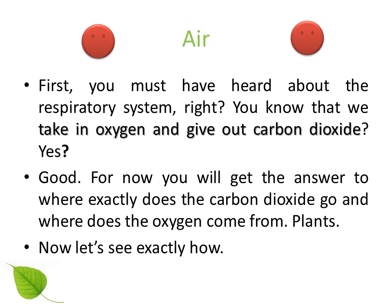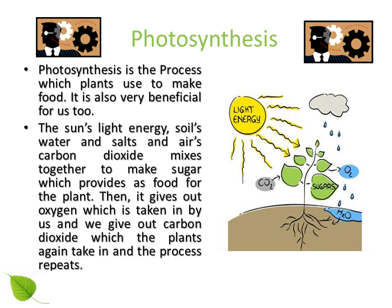Now let's see exactly how. Photosynthesis is the process which plants use to make food. It is also very beneficial for us. The sun's light energy, soil's water and salts, and the air's carbon dioxide mix together to make sugar, which provides food for the plant. Then it gives out oxygen, which is taken in by us, and we give out carbon dioxide which the plant again takes in, and the process repeats.